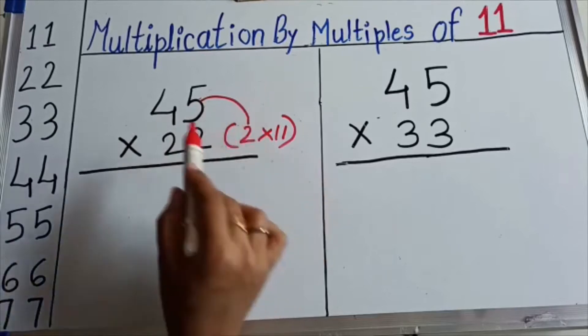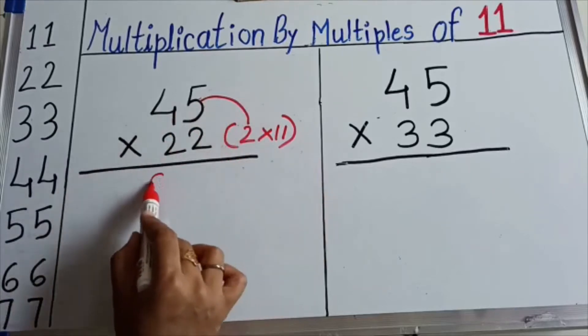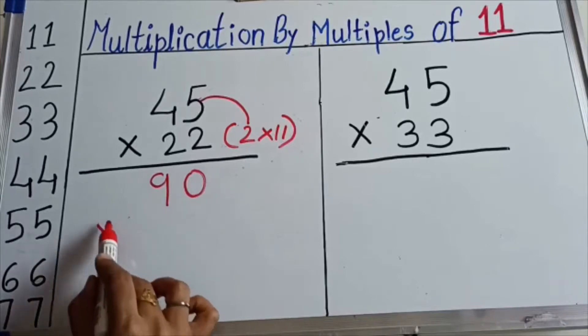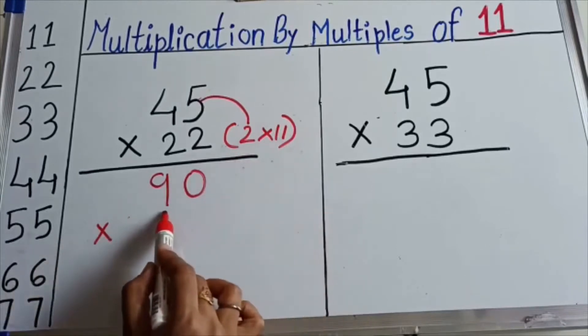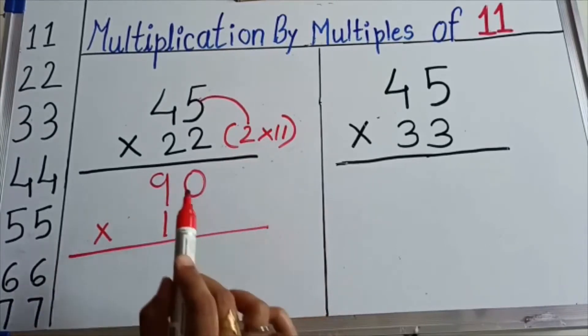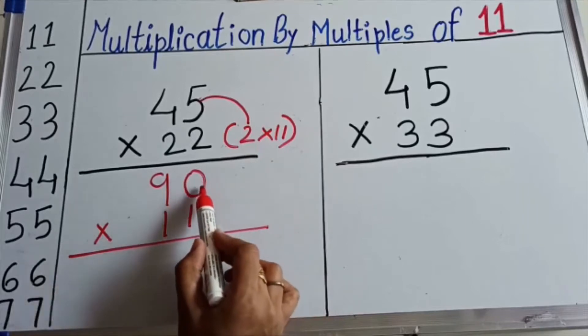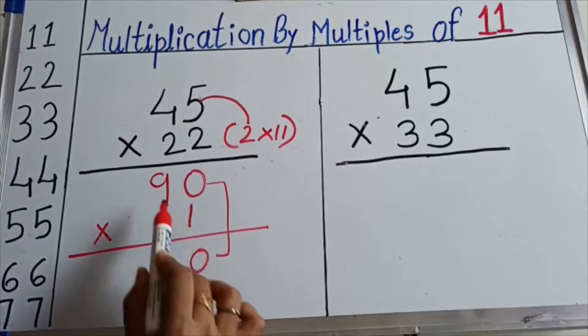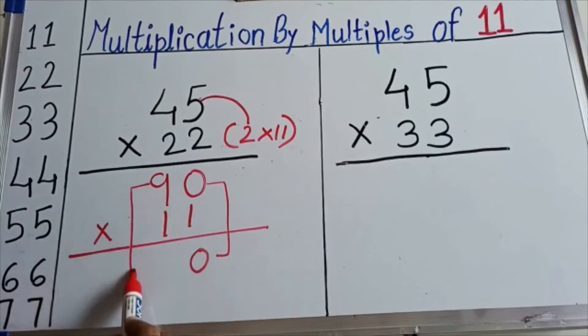45 2's are 90. Now again I will write this 11 at the down. Now let's solve this. Here I will write 0 as it is here and 9 as it is here.